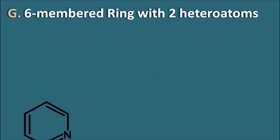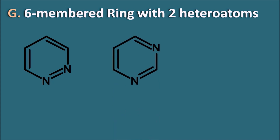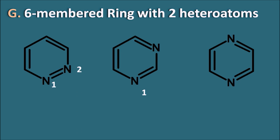Now, the six-membered ring systems with two heteroatoms. We can add another nitrogen at the second position, or at the third position, or at the fourth position. So nitrogens can be present at the first and second, first and third, or first and fourth positions.